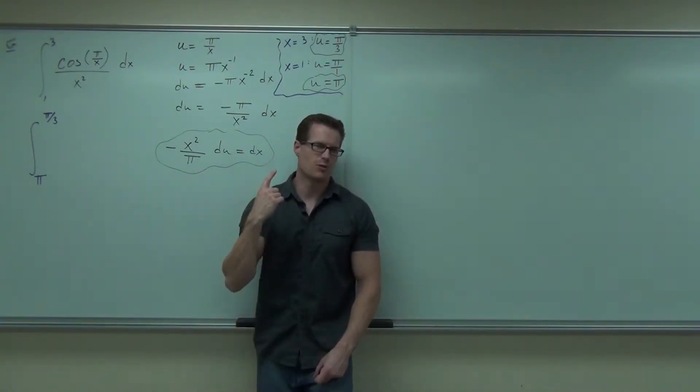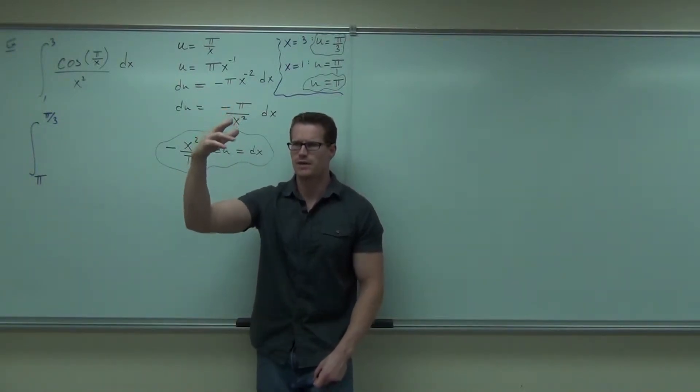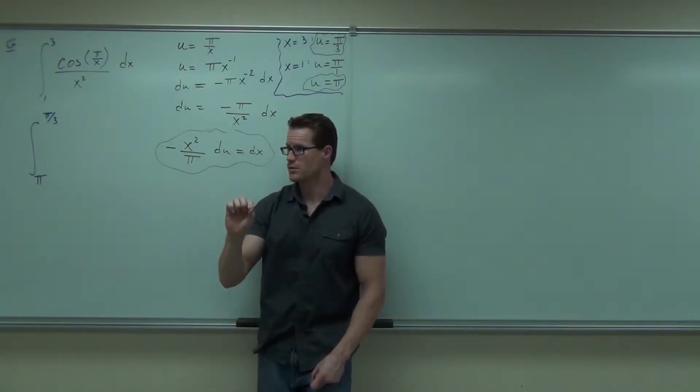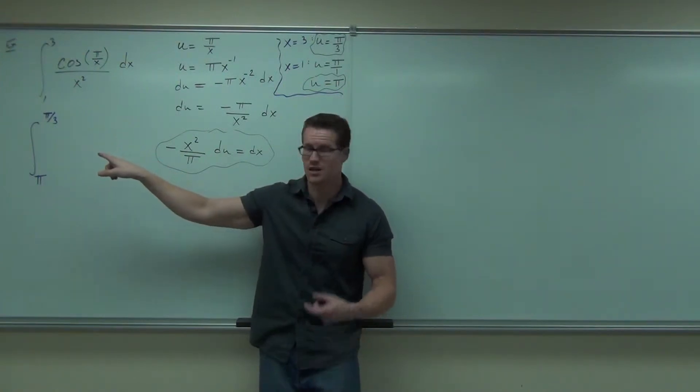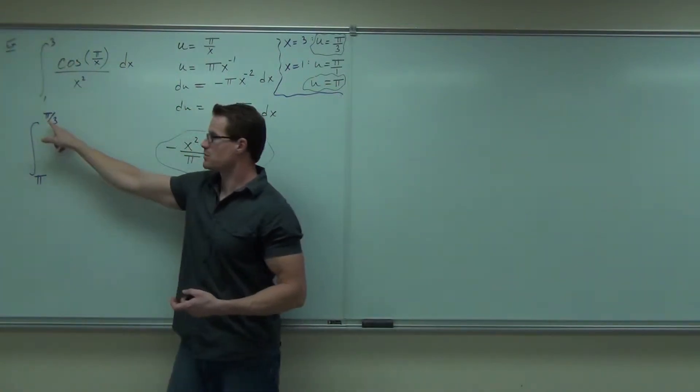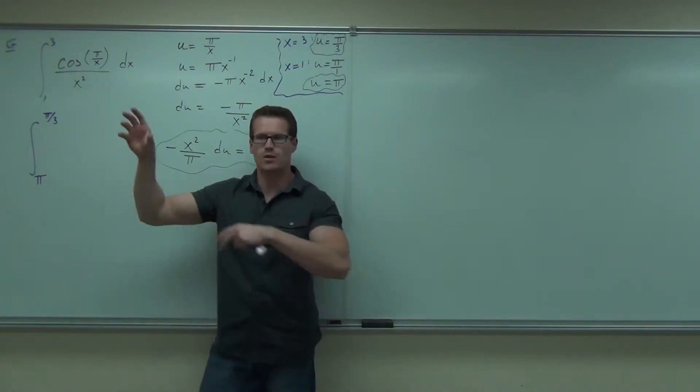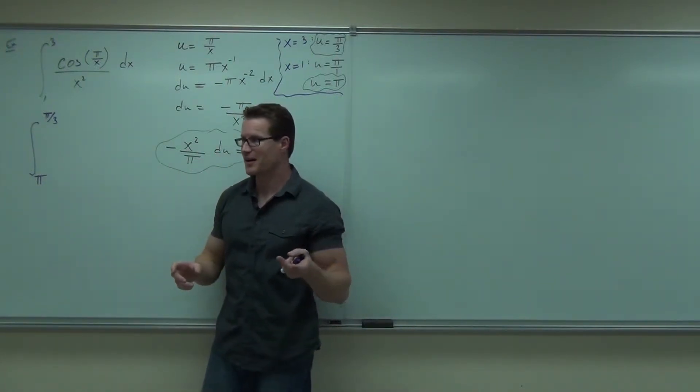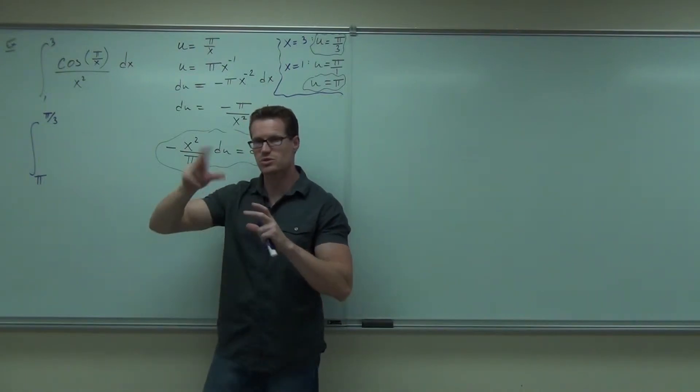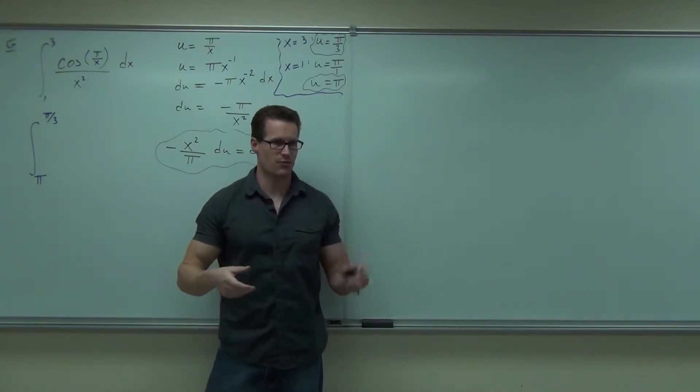The reason why I said be careful is because if you go, oh yeah, integrals always go from π/3 to π, then you're going to miss that negative. You had to write it like that first because the 3 maps to π/3, the 1 maps to π. You can't write them backwards just because you want to. We've got to really be careful on that, and if you're going to switch them around, then you're going to have that negative up front.